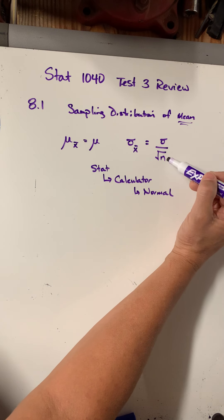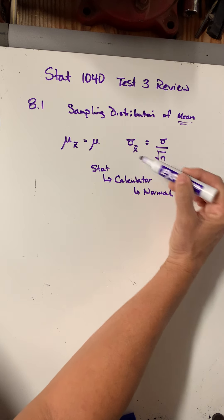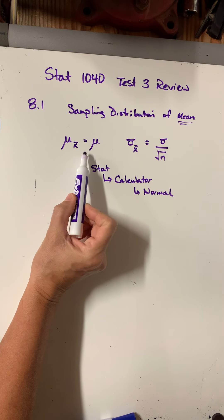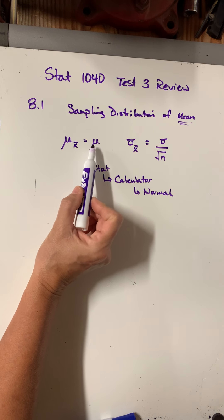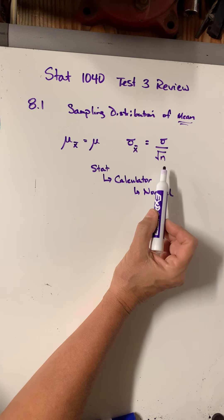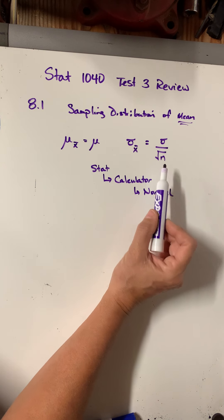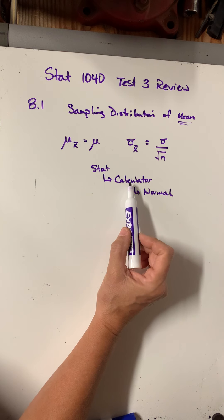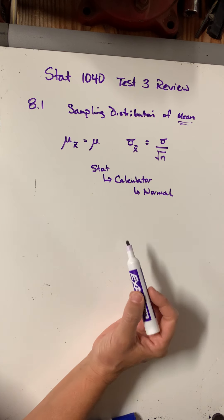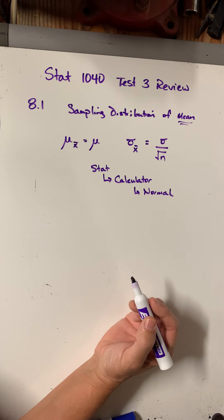Keep in mind: every time they give you a new sample size, you have to recompute the standard deviation. The mean stays the same — it's not dependent on the sample size. But every time they give you a new sample size, you'd have to recalculate your standard deviation and put it into the normal calculator before answering the probability question.